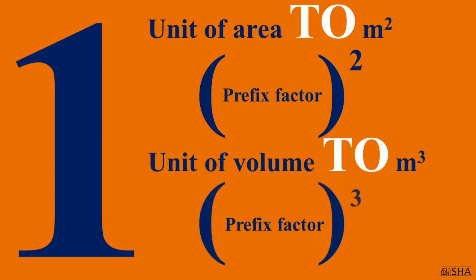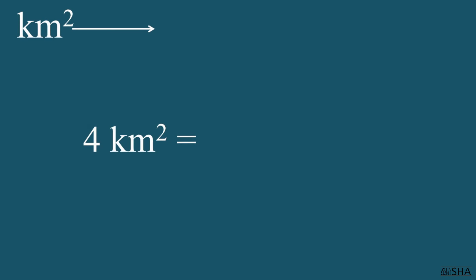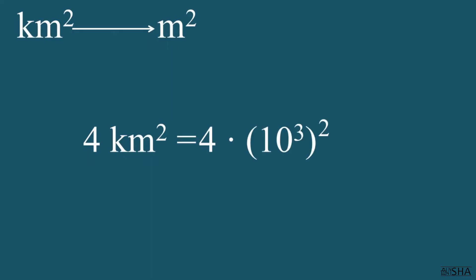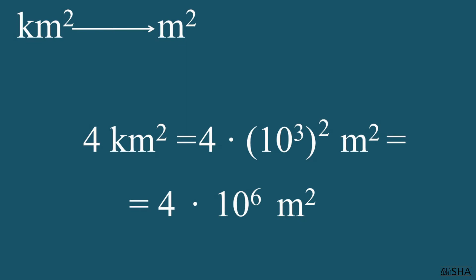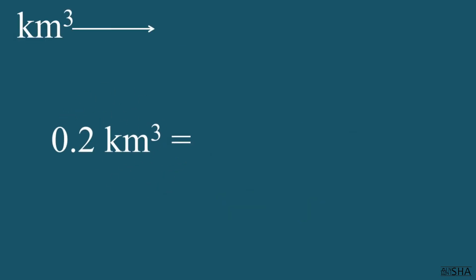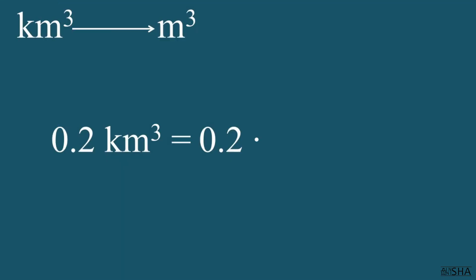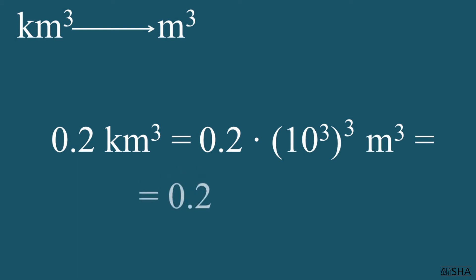Let's try to apply this rule by examples. Let's convert 4 square kilometers to square meters. We simply rewrite 4 and multiply it by the factor of the prefix kilo, that is 10 to the third power. Since the area is measured in square meters, we raise the factor to the second power. Knowing power rules, we get 4 times 10 to the sixth power meters squared. We do the same with units of volume: 0.2 cubic kilometers is to be converted to cubic meters. We rewrite 0.2 and multiply it by the factor of the prefix kilo, which we raise to the third power. We get 0.2 times 10 to the ninth power cubic meters.